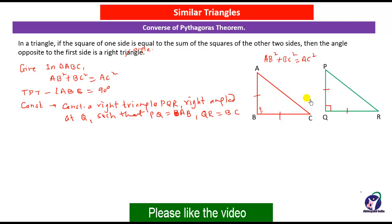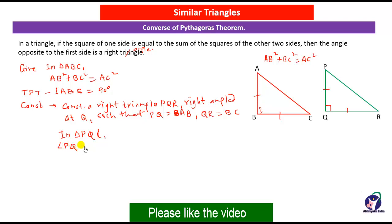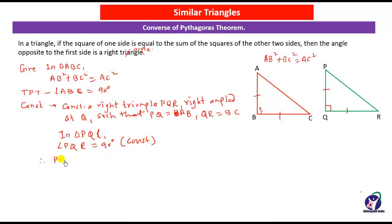Now we have these two triangles. In triangle PQR, since angle PQR = 90 degrees by construction, we can apply the Pythagoras theorem: PQ² + QR² = PR².